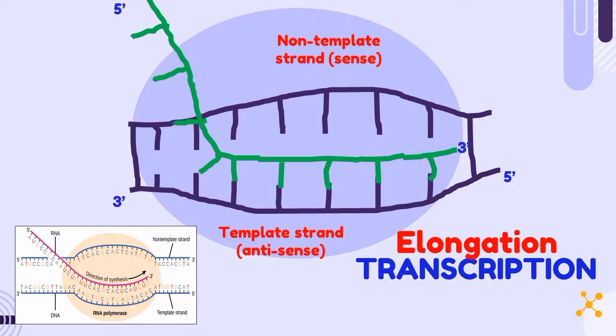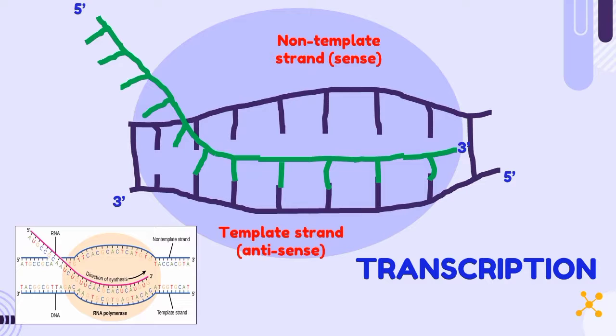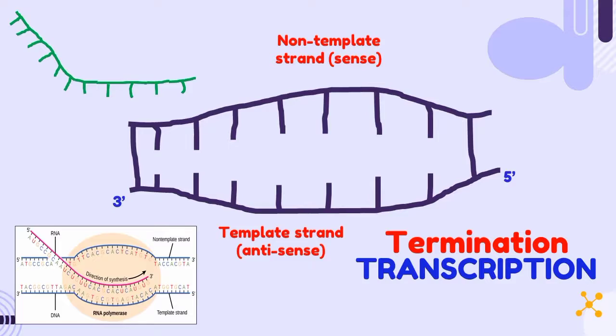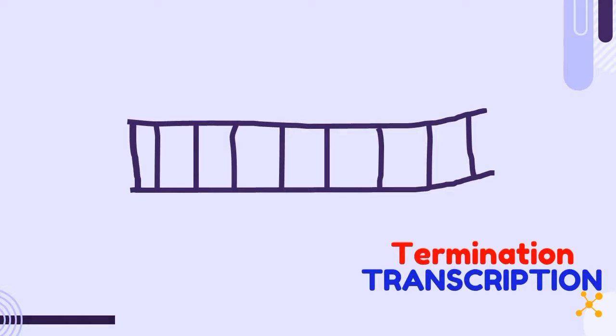So as you can see here, the mRNA being synthesized is complementary to the direction of the template strand or the antisense strand. Once RNA polymerase reaches the end of the gene, termination occurs. The enzyme or the RNA polymerase and the mRNA start to detach from the gene. And the DNA is returned to its original state.